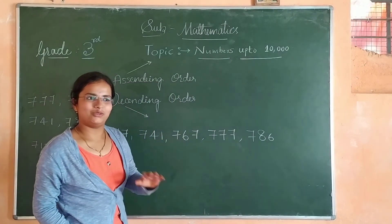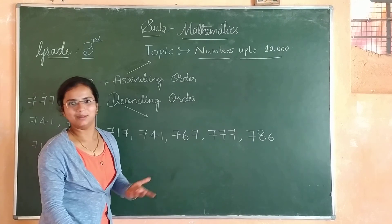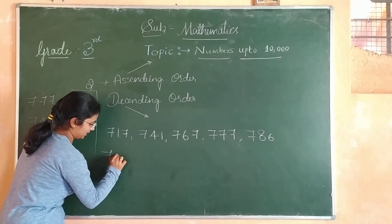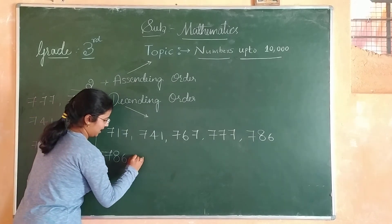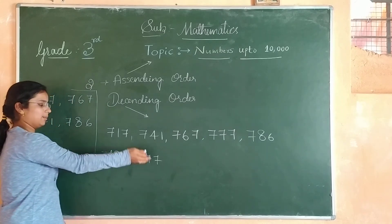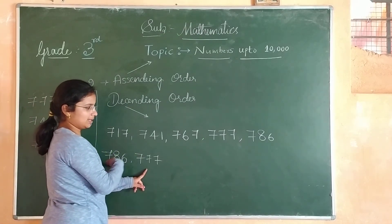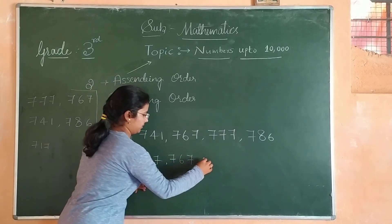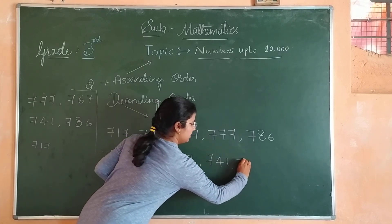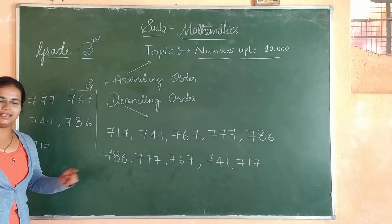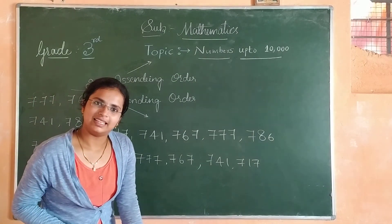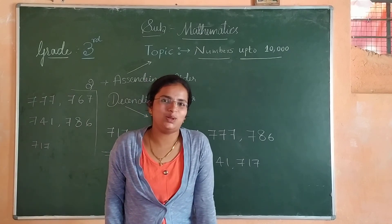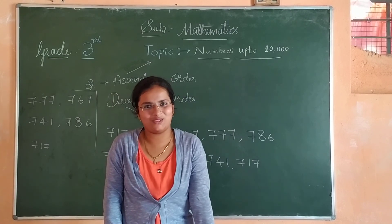I hope all of you understand how to compare numbers — for example, 777 is smaller than 786 but bigger than 767. This is how we write numbers in ascending and descending order. There are many examples given in your exercise 1.3, which is your homework. Please solve exercise 1.3. Thank you.